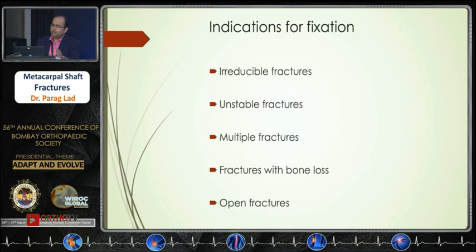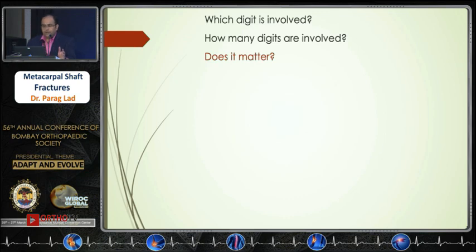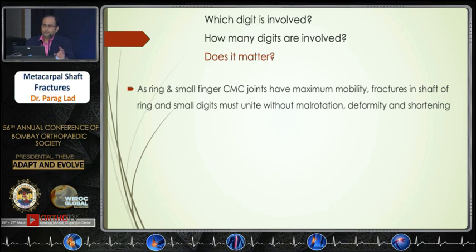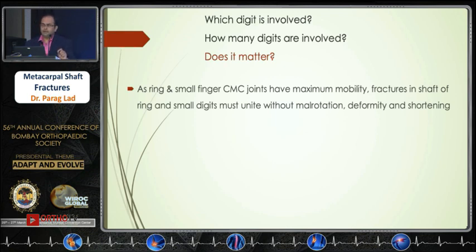These are the absolute or relative indications for fixation of any metacarpal fracture. It is important to know which digit is involved and whether multiple digits are involved, as this matters for overall function. If there is a fracture in the ulnar digits — like the ring finger and small finger — the entire grip of the hand comes from the ulnar aspect. Also, the carpometacarpal joint in the hand has maximum mobility, so accurate reduction and union at ring and small finger metacarpal fractures is necessary.